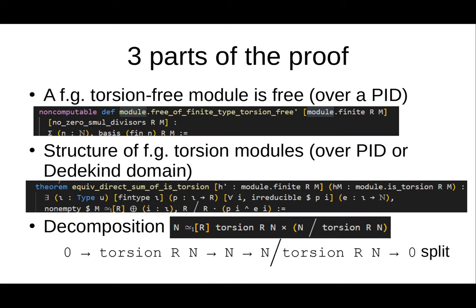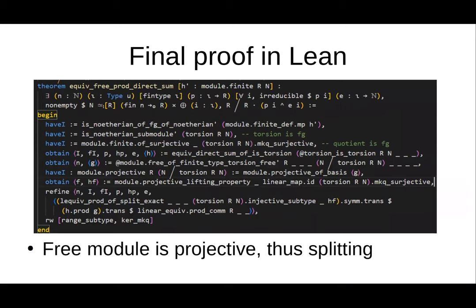For the general module case: what we need to do is decompose M between its torsion submodule and the quotient by its torsion submodule, which is torsion-free. But to do this we need to prove that the exact sequence here is split. The reason it splits is that the free module is projective, and so our exact sequence splits.